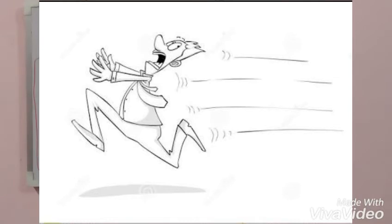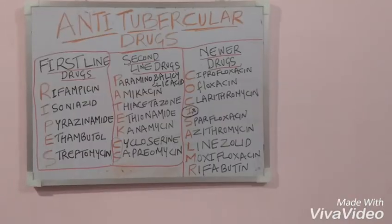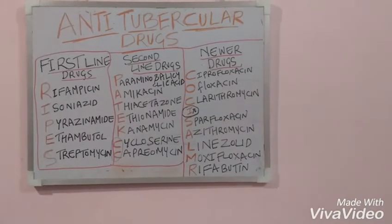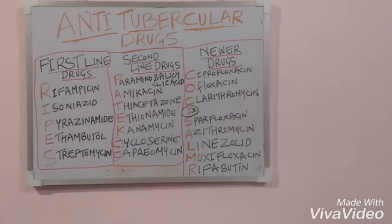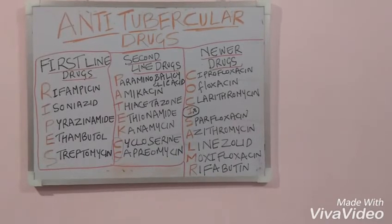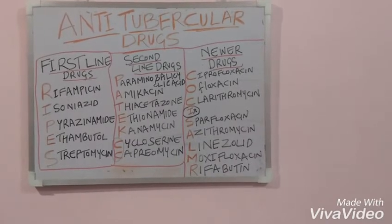These are the anti-tubercular drugs in brief. RIPES stands for Rifampicin, Isoniazid, Pyrazinamide, Ethambutol, and Streptomycin.